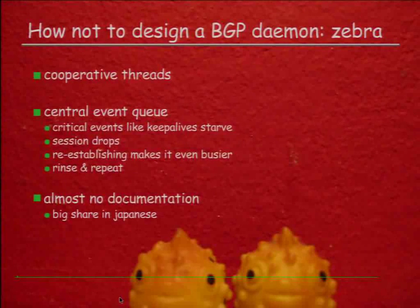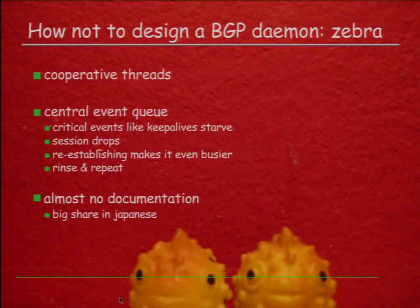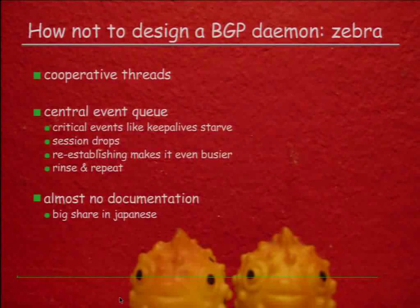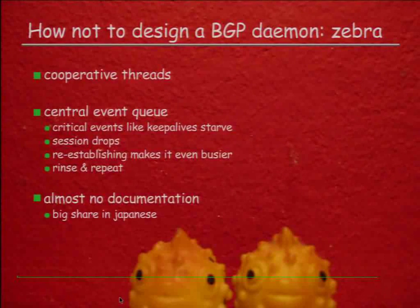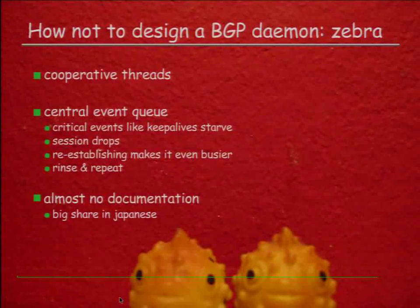That Zebra thing is a prime example of how not to design a BGP daemon. First mistake — you know this famous saying: there are three kinds of bugs — my bugs, your bugs, the threats. You can make this even worse: cooperative threads combined with the model of a central event queue becomes much, much worse. A session coming up or going down is an event. Receiving a routing update is an event.